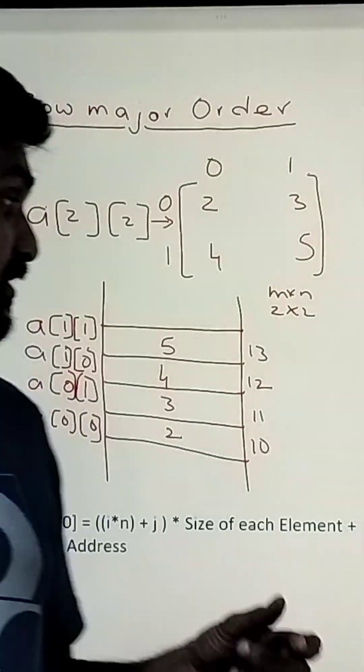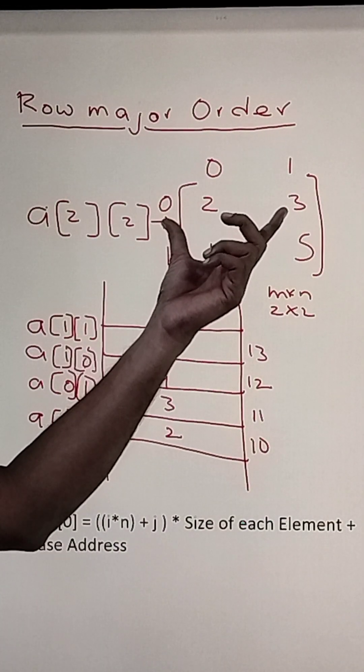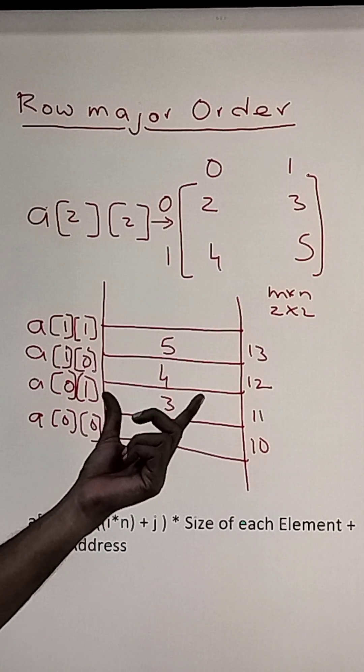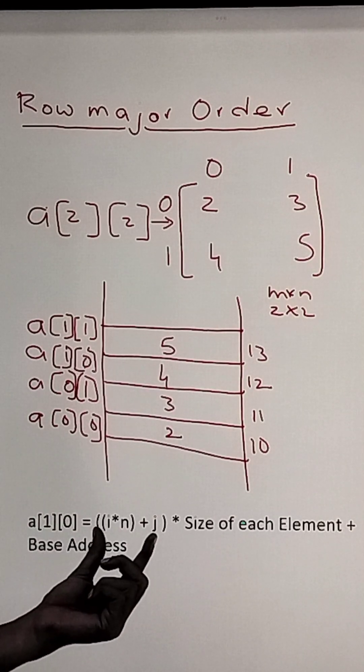This is how the elements will get stored. For example, if this is the two-dimensional array, this is our visualization of the two-dimensional array, and this is how the elements will get stored in memory. The formula used by row-major order is: i × n + j × size of element + base address.